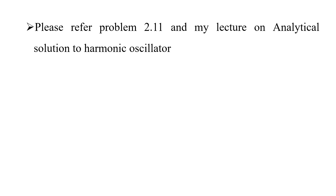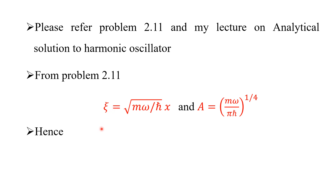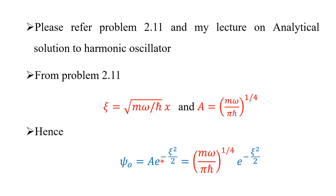Before going into the problem, please refer to Problem 2.11 and my lecture on the analytical solution to the harmonic oscillator. From Problem 2.11 we have seen that z = √(mω/ℏ)·x, and the normalization constant A = (mω/πℏ)^(1/4). So the wave function can be written as ψ₀ = A·e^(−z²/2), where A = (mω/πℏ)^(1/4).